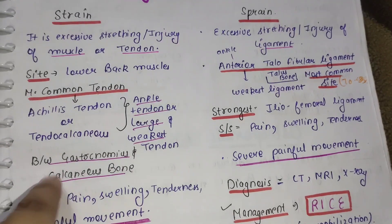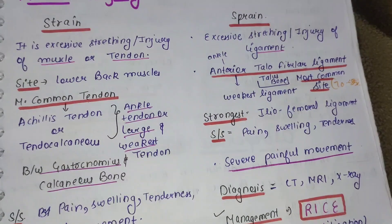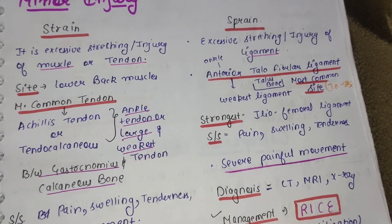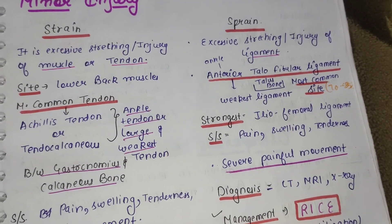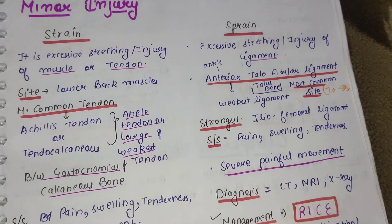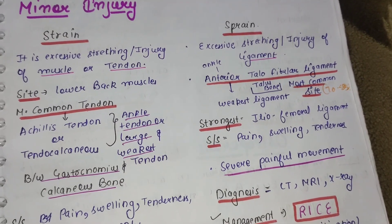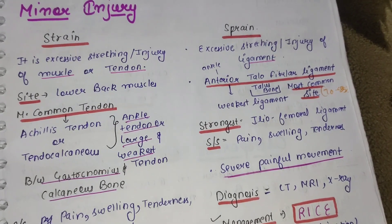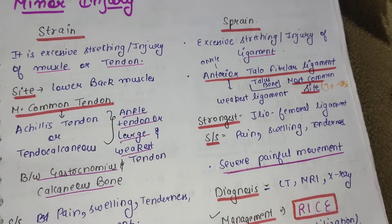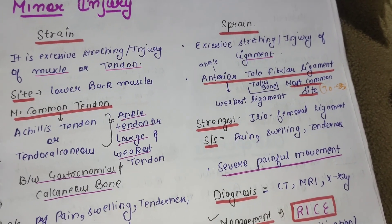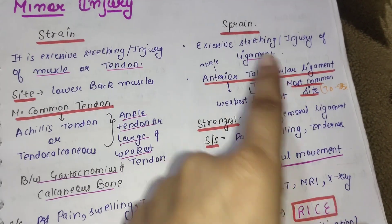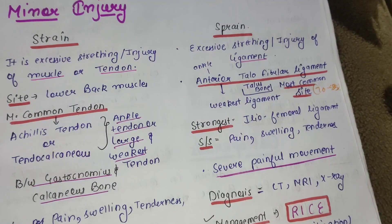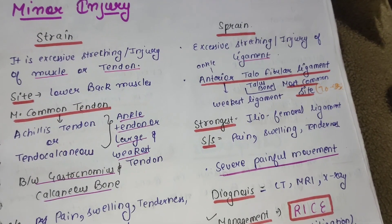Sprain is excessive stretching and injury of ligament. In sprain, excessive stretch होती है जो ligament होते हैं, वो ज़्यादा stretch हो जाते हैं और injury हो जाती है ligament की. Now ligament क्या होते हैं — यह bone को bone से attach करवाते हैं, वो होते हैं ligament.